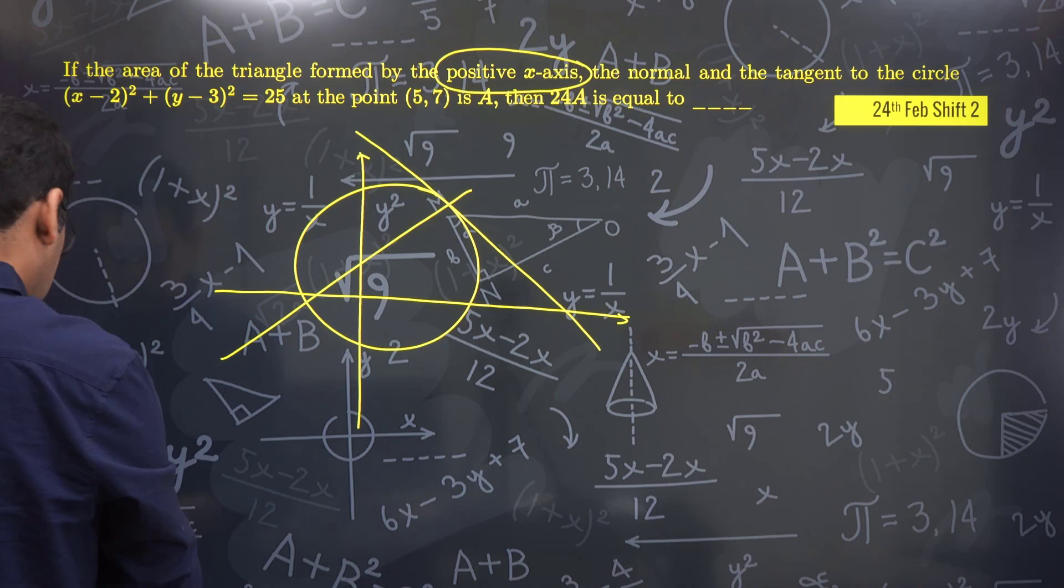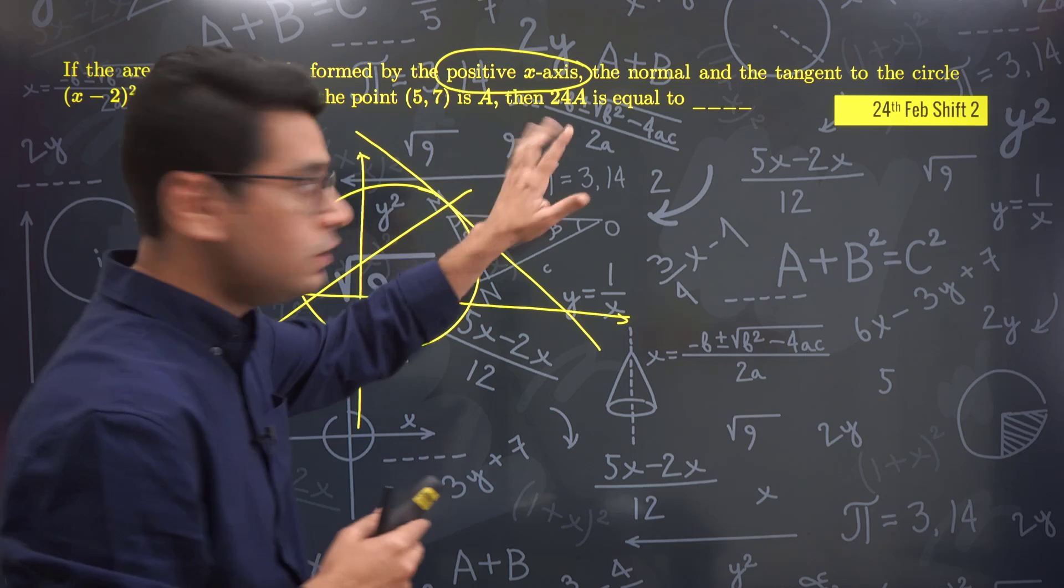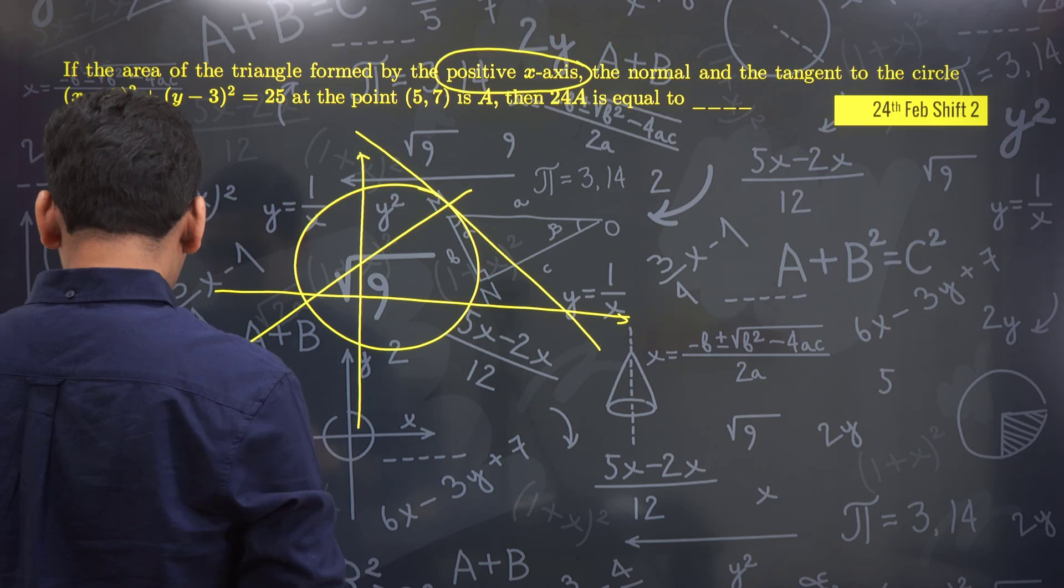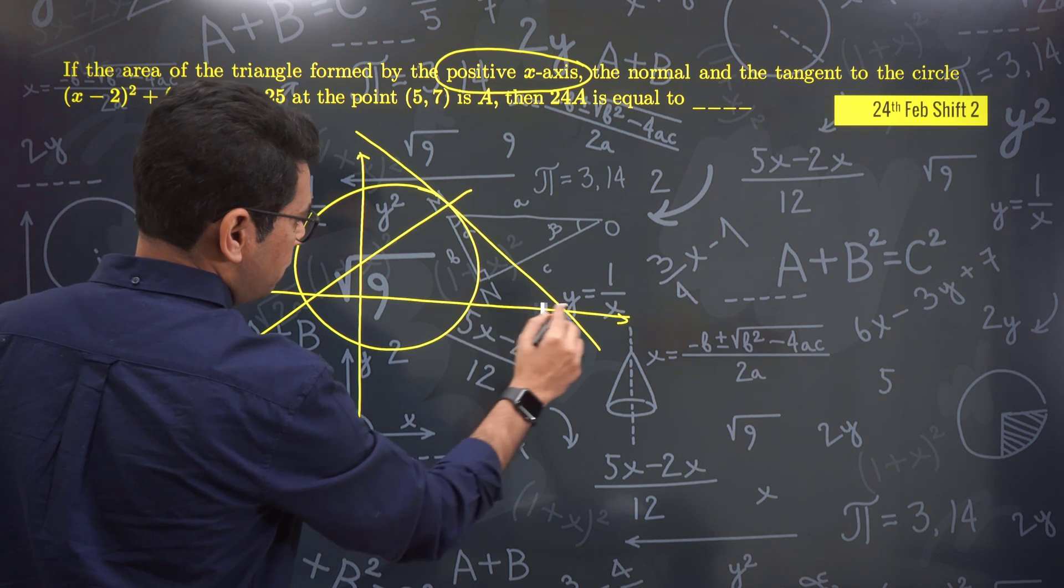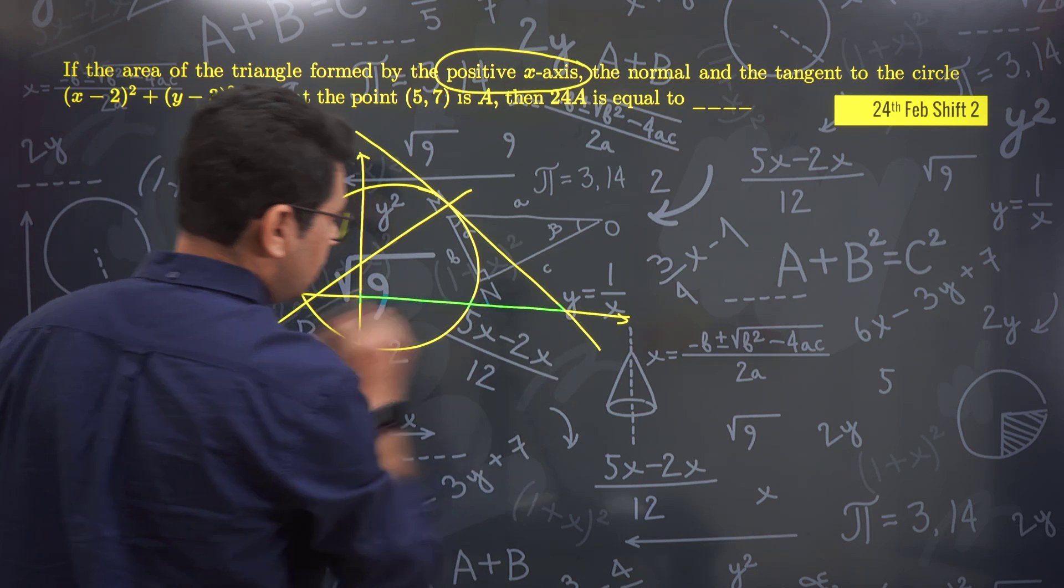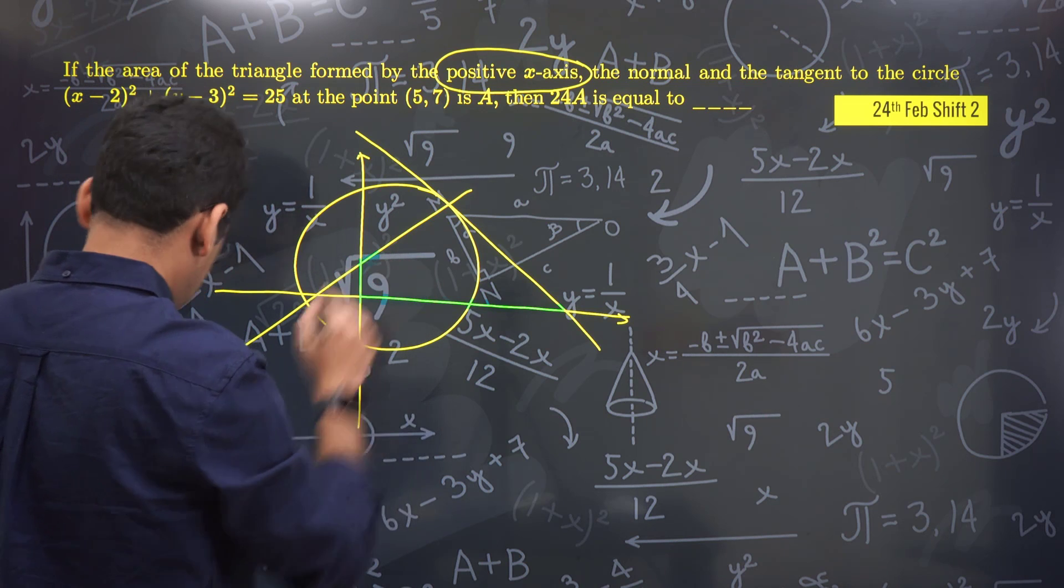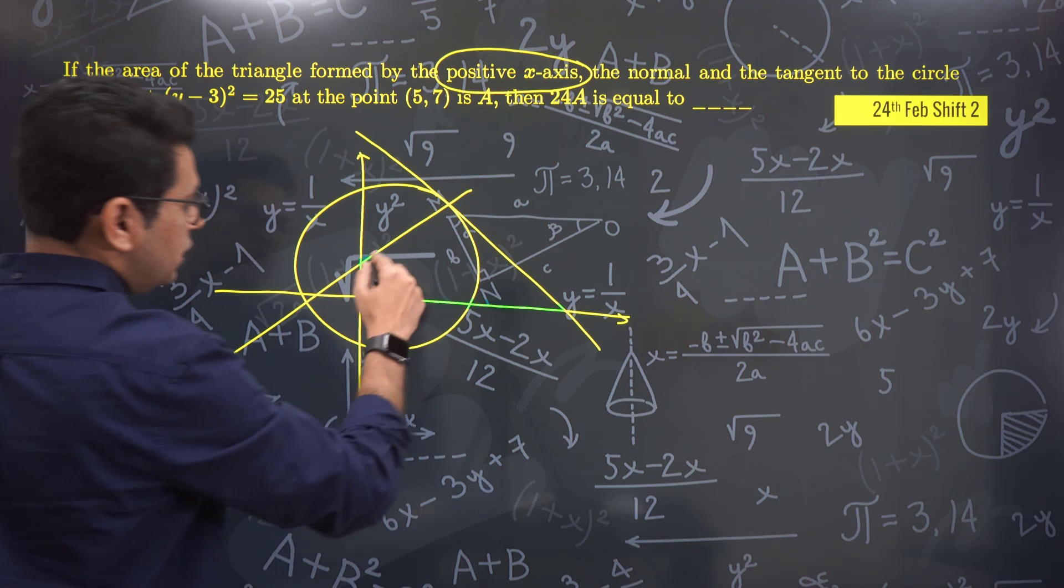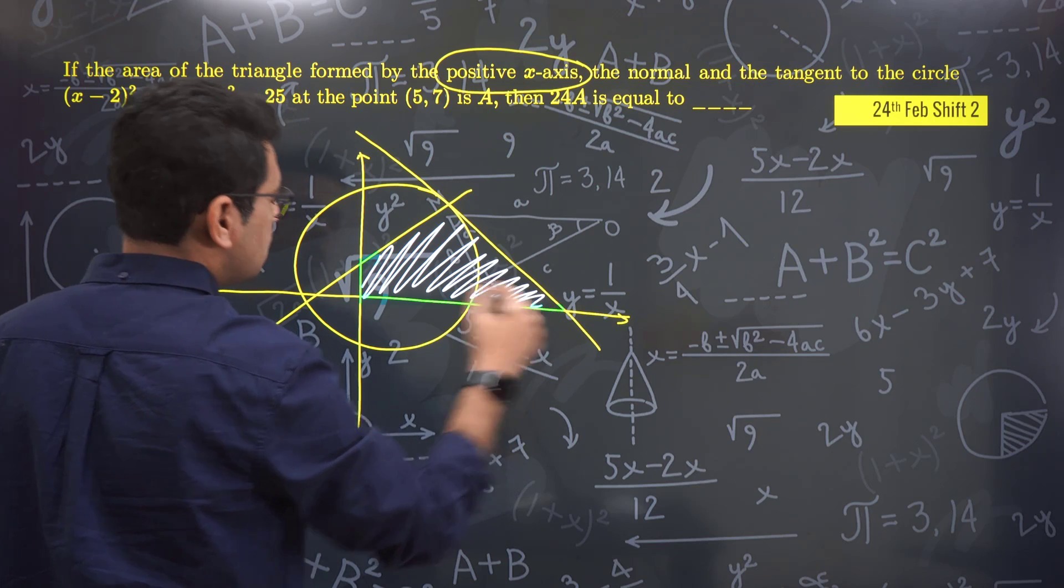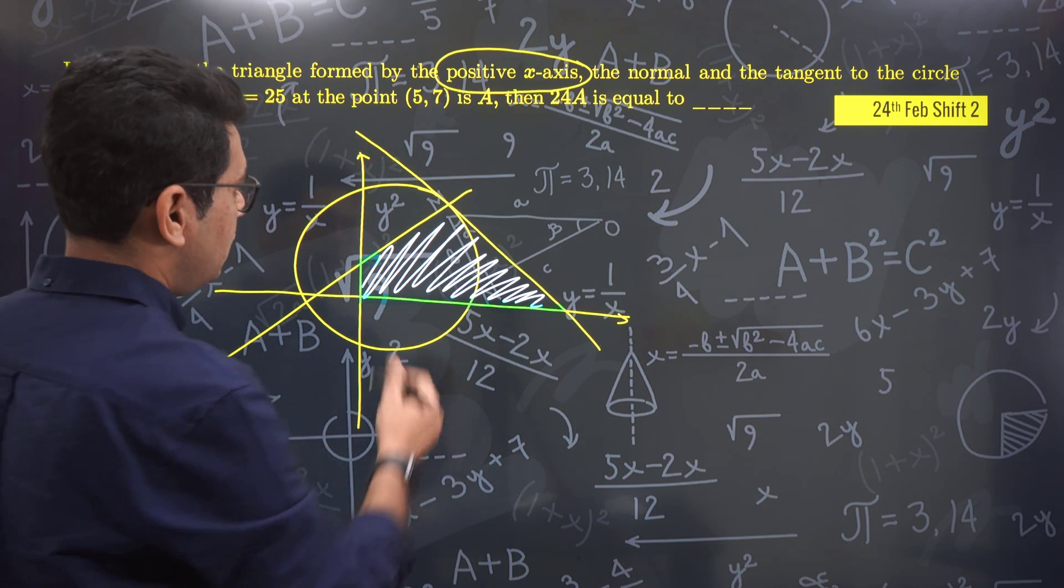This was the diagram. If you plot the diagram and check, what are they asking you? Find the area of the triangle formed by the positive x-axis. Positive, very good. Where is the positive x-axis? This is the positive x-axis, this one. So this region should have been considered. But if you see, this region that you're seeing is not even a triangle. This is not even a triangle. So even if I don't proceed with the question further, I would have got confused - what is happening here?